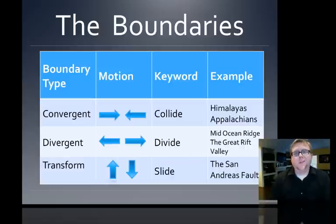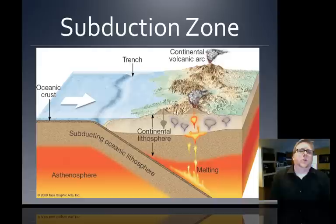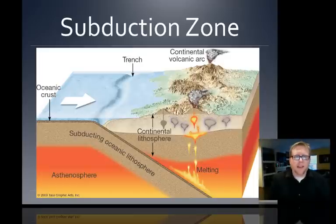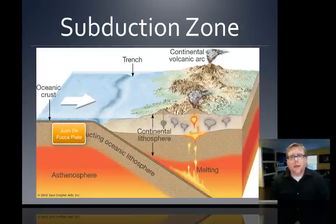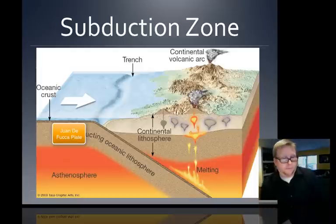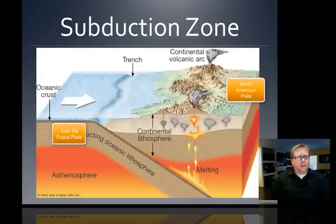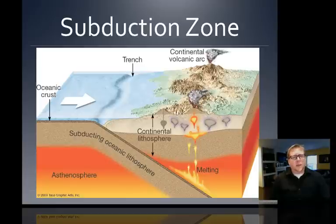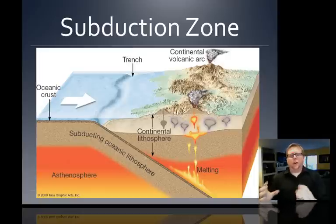Now you live in Oregon, so the boundary you're most interested in is subduction. In Oregon, we live on an active subduction zone. If you looked out toward the ocean, you'd see the Juan de Fuca plate, and the continent would be the North American plate. This is a type of convergent boundary where the oceanic plate is made of really dense, heavy basalt, and the continental plate is mostly granite — much lighter.